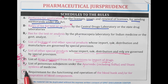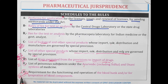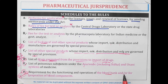Schedule F — F for family, and we always try to protect our family by giving blood or other organs. So Schedule F is the requirement for the functioning and operation of a blood bank and for the preparation of blood components.